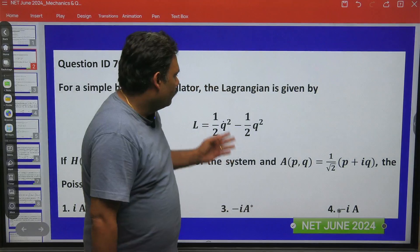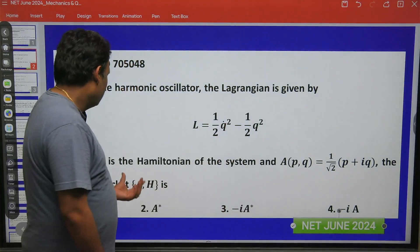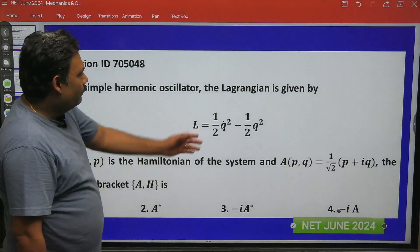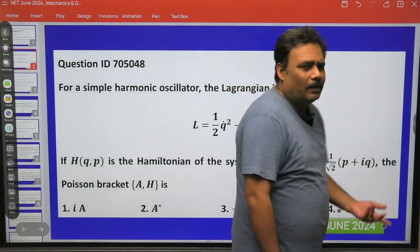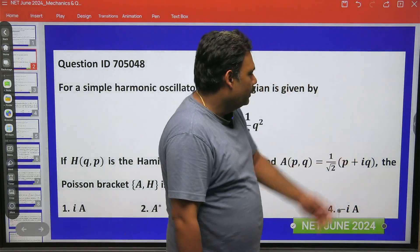Hello friends, let us try to solve one more question. This is a very simple question from the Poisson bracket. The Lagrangian for simple harmonic motion is given and there is one physical quantity, A = 1/√2 (p + iq).